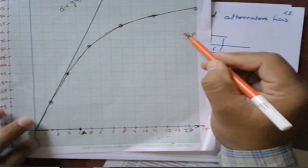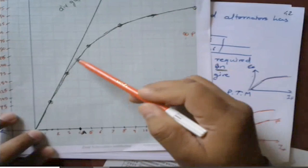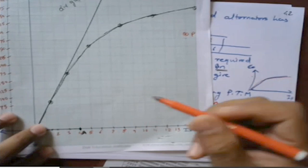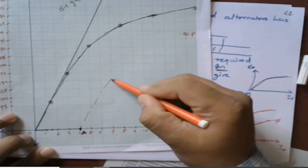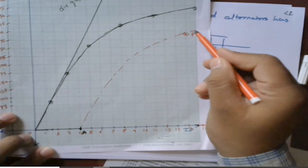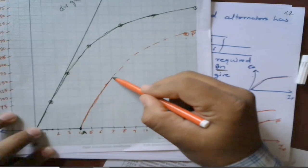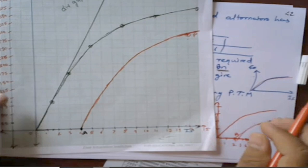We now join Point A and Point P such that the curve is parallel to the OCC. This curve is the zero power factor curve.